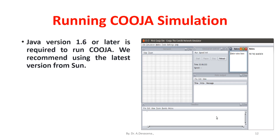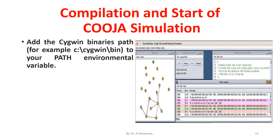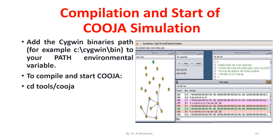Java version 1.6 or later is required to run Koja, and we recommend using the latest version from Sun. In addition, the build tool ANT is also required for building Koja. For Windows users, we recommend using Cygwin. Add the Cygwin binaries path — for example, C:\cygwin\bin — to your PATH environment variable. To compile and start Koja, see the tools/koja-and-run.